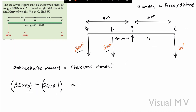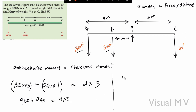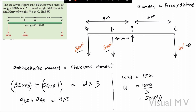On the right side, there is only one clockwise force, which is W at a distance of 3 meters. Solving: 320 × 3 = 960, and 540 × 1 = 540. So 960 + 540 = W × 3, giving W × 3 = 1500. Therefore W = 1500 / 3 = 500 Newton. The weight of Harry is 500 Newton.